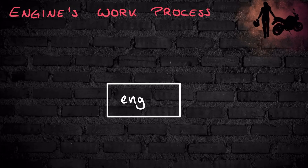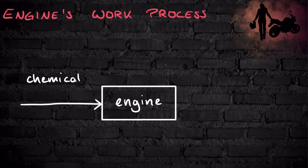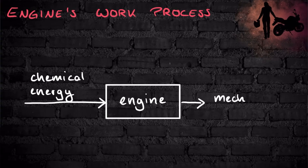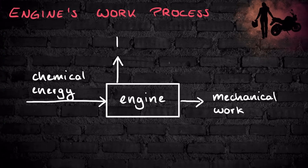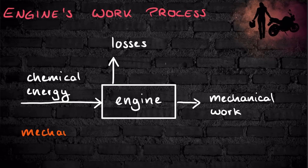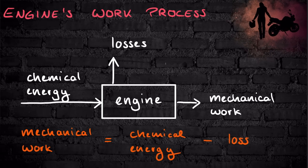To make this more understandable, let's draw a sketch. Here's the engine. Chemical energy goes into it, and inside the engine this is converted into mechanical work. But there are also losses. Here's a little formula: the mechanical work we can actually use is the chemical energy minus the losses.